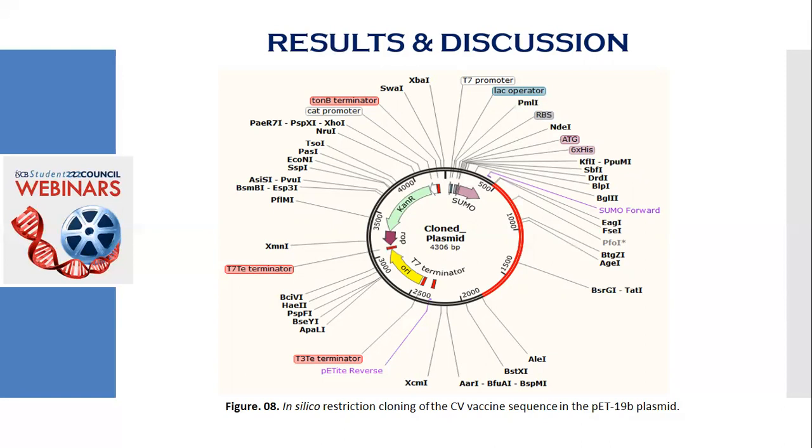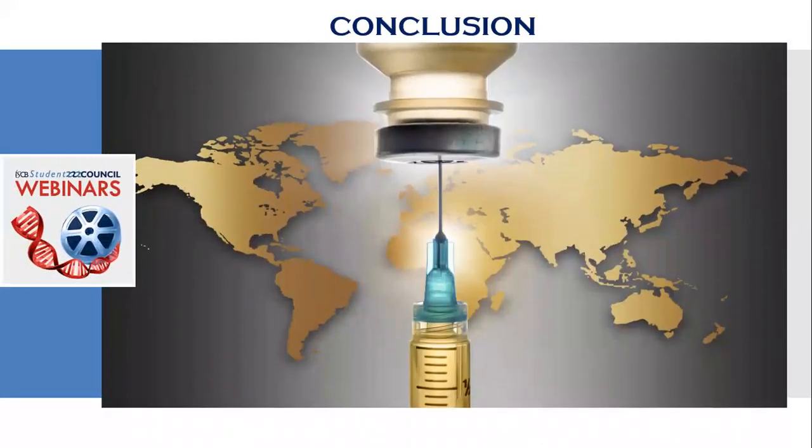Therefore, the study revealed the vaccine construct is a potential candidate. Nevertheless, the vaccine construct must undergo lab-based inception for regulating its safety, usefulness, and competency. We hope that inhibition of the selected proteins of the virus would consequently halt the viral entry and thus, the life cycle of the virus will be prohibited.